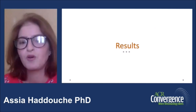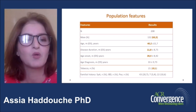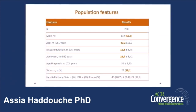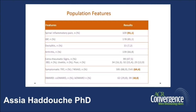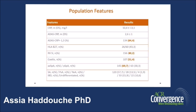The results were as follows. We included 208 patients, mainly men. The mean age was 41 years, mean disease duration 11 years, mean age at onset 28 years, and 10% of patients were smokers. Over 19% of patients suffered from spinal inflammatory pain; 67% presented arthritis. Importantly, 64% of patients were treated with NSAIDs and 19% with biologics, which could influence the results. 64% of this SpA was active, and 70% of patients were classified as axial spondyloarthritis.